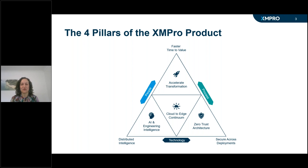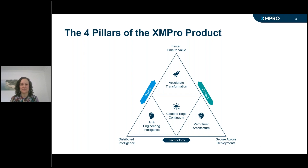Every initiative that we work on falls under one of the four pillars of the Eximpro product: accelerate transformation, AI and engineering, zero trust architecture, and the cloud to edge continuum. Together they support each of our three themes — faster time to value, distributed intelligence, and security across deployments. This triangle layout illustrates how each of these pillars support one another as well as their varying impact on people, process and technology.